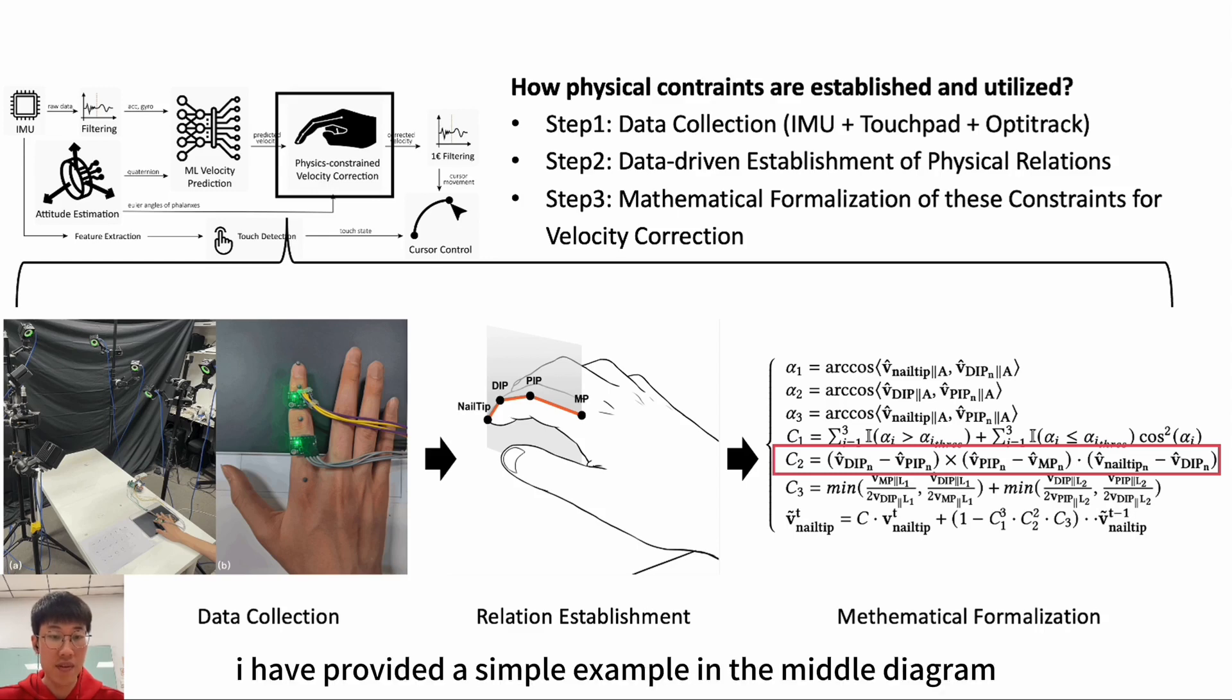To illustrate, I have provided a simple example in the middle diagram. We observed that the fingertip, the palm bone joints, middle joints, and distal joints of the index finger lie on the same plane. During the actual implementation of the algorithm, we formalize these physical constraints mathematically. For instance, the formula within the red box on the right represents a coplanar relationship. Our attitude estimation algorithm and machine learning algorithm calculate and predict the postures and velocities of various key points, respectively. Through these mathematical formulas, we verify whether the corresponding physical constraints are met. If the compliance with the physical constraints is low, the confidence score obtained will be minimal, and the velocity prediction for that frame will be mostly filtered out.